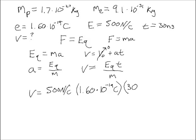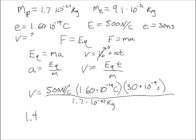t is 30 nanoseconds, so converting that to SI units of seconds, that's 30 times 10 to the minus 9 seconds. Then we divide that by the mass. In the case of the proton, 1.7 times 10 to the minus 27 kilograms, giving us a speed for the proton of 1.41 times 10 to the 3 meters per second.